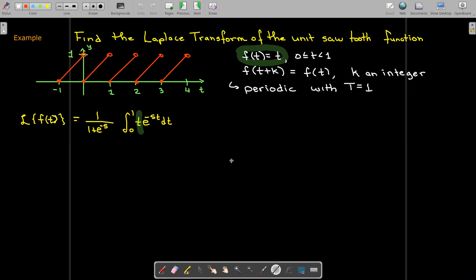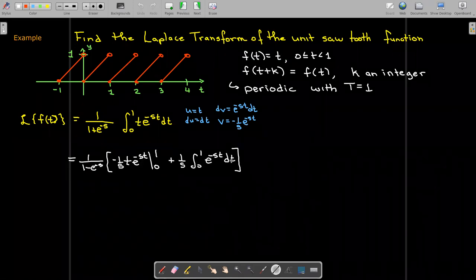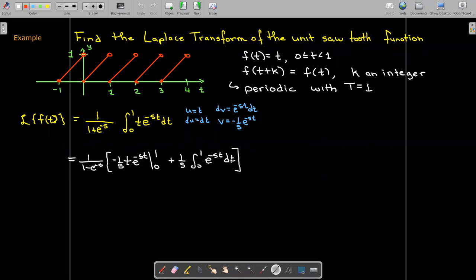We'll evaluate this integral using integration by parts. The antiderivative of e^(-st) is negative one over s times e^(-st). I have my uv portion, I'll go ahead and evaluate that,